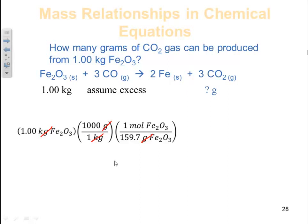So that will come from my balance equation, which is a one to three ratio. So I have three moles of CO2 to one mole of iron 3 oxide. I'll put it in this fashion so I can get things to cancel.